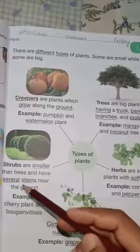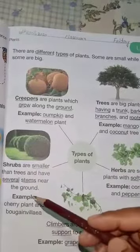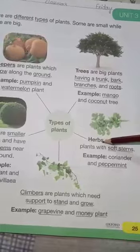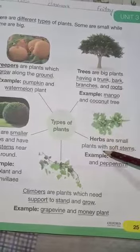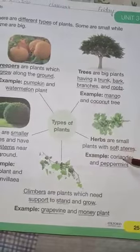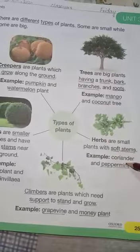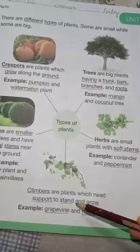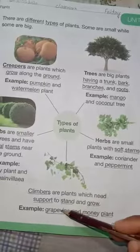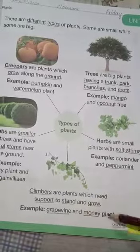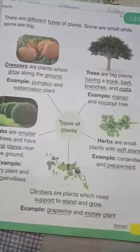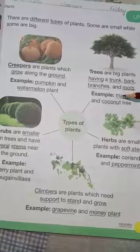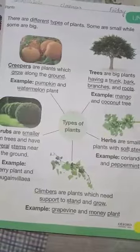Herbs are small plants with soft stems, like coriander and peppermint. Climbers are plants which need support to stand and grow, like grapevine and money plant. Understand, Class 1? You will learn the difficult words very carefully. Take care of yourself.